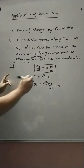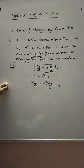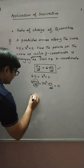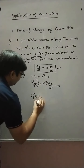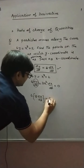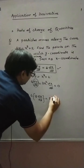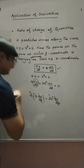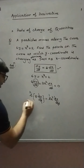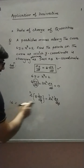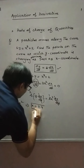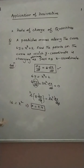Now we apply the condition dy/dt = 8·dx/dt. Substituting, we get 6·(8·dx/dt) = 3x²·dx/dt, so dx/dt cancels out. Simplifying: 48 = 3x², which gives x² = 16. Therefore x = ±4.